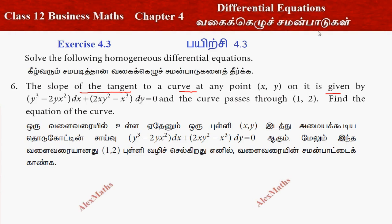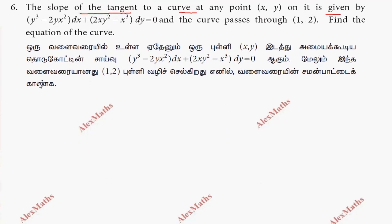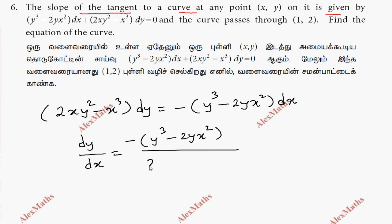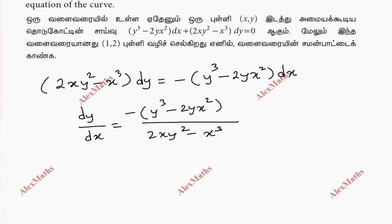So in this case, we will find dy/dx. dy/dx is given by: the second term is 2xy² minus x³, into dy, and the first term is minus — so minus of y³ minus 2yx² — into dx. So dy/dx equals: right side term is numerator and left side term is denominator: 2xy² minus x³. Now this is a homogeneous differential equation — if you think about it, one term power is the same: y³ has power 3, this is y power 1 and x² total power 3, this is x power 1 and y² total power 3 — total power 3.